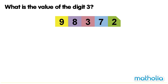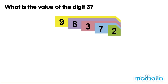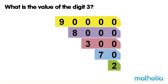What is the value of the digit 3? Place value cards have been used to make the number 98372. Let's find the value of the digit 3. Let's separate the number into its different place value cards. We can see that digit 3 has a value of 300.